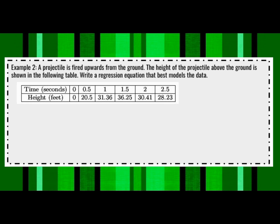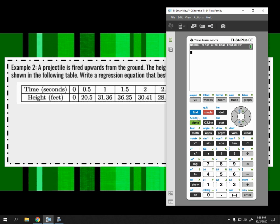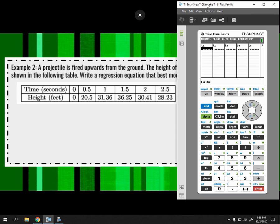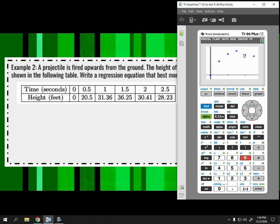I'll type in my x- and y-values, then look at a scatterplot with ZOOM 9. It looks pretty quadratic, although something's happening at the end — maybe a gust of wind. A straight line is not going to be the best model. An exponential function would start low and just keep going up or, for decay, keep coming down — so I don't think exponential would best fit here. Sometimes you can tell from the scatterplot.